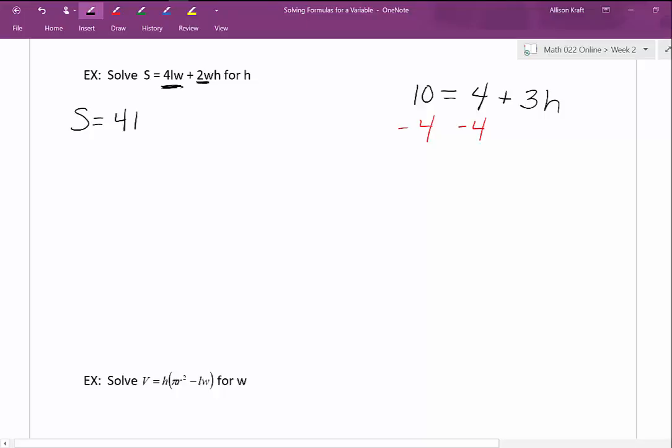We're going to start by subtracting that first term on the right hand side. It's a positive 4LW, so I'm going to subtract 4LW from both sides. These are not like terms on the left, so we just have to write them next to each other.